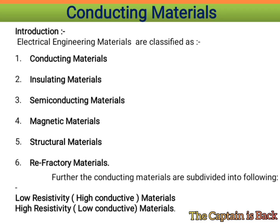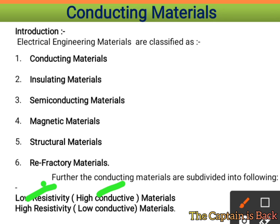A low resistivity material is naturally a high conductor, and if it is a high resistivity material, it is definitely a low conductor. This is what you have to understand.